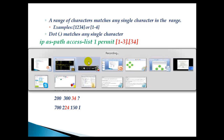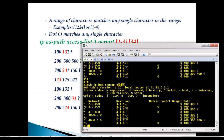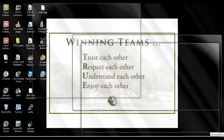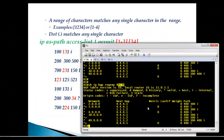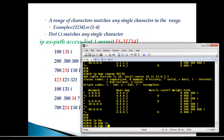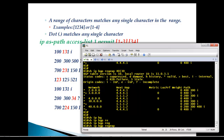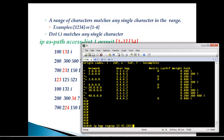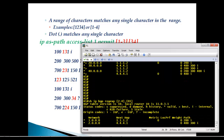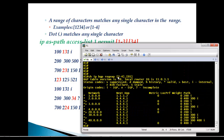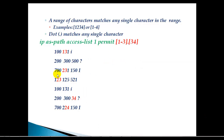For verification, use 'show ip bgp regular-expression [2-4]', which matches AS paths starting with either 2, 3, or 4, combined with any of those digits. This demonstrates how range matching works in practice with the router's BGP table.